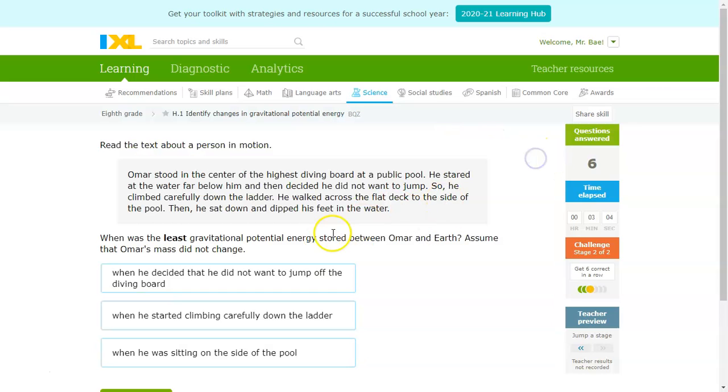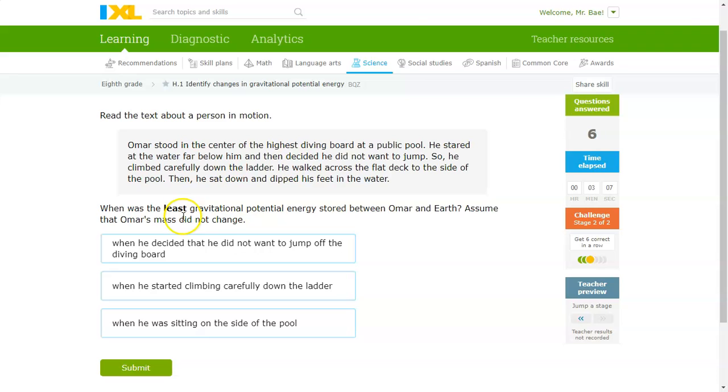Okie dokie. Next question. Least gravitational potential energy. So, this is the time when it's at the lowest point on the ground, the least distance between it and the Earth. Omar stood in the center of the highest diving board of the public pool. He stared at the water far below him and then decided he did not want to jump. So, he climbed carefully down the ladder. He walked across the flat deck to the side of the pool. Then, he sat down and dipped his feet in the water. So, this is probably when he was at the lowest point, when he was sitting on the side of the pool, because that's when he's closest to the ground.